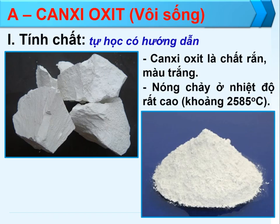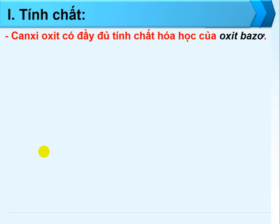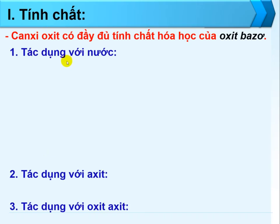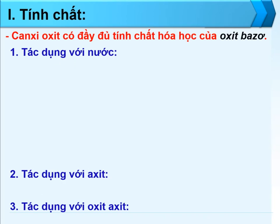Các em ghi nhận những nội dung ở phần tính chất: Thứ nhất, canxi oxit là chất rắn, màu trắng. Thứ hai, nóng chảy ở nhiệt độ rất cao khoảng 2585°C. Các em lưu ý rằng canxi oxit là một oxit bazơ, do đó canxi oxit có đầy đủ tính chất hóa học của một oxit bazơ. Oxit bazơ gồm có những tính chất: 1. Tác dụng với nước; 2. Tác dụng với acid; và 3. Tác dụng với oxit acid.